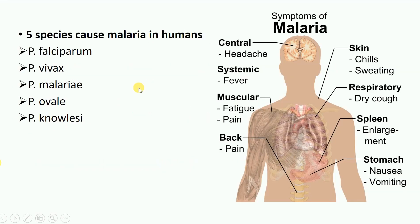Common symptoms of Malaria are fever, constant muscular fatigue and pain, headache, chills and sweating, as well as a nauseous feeling. There is also an increase in the size of the spleen, which is a lymphoid organ, because inside the spleen the parasite is actually interacting with the fighting machinery of the body.